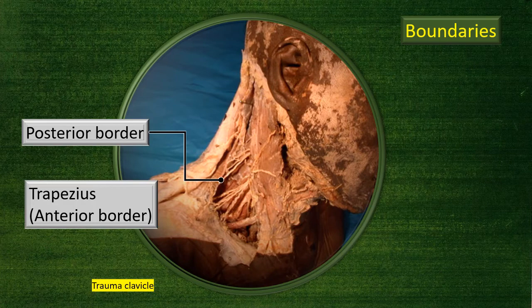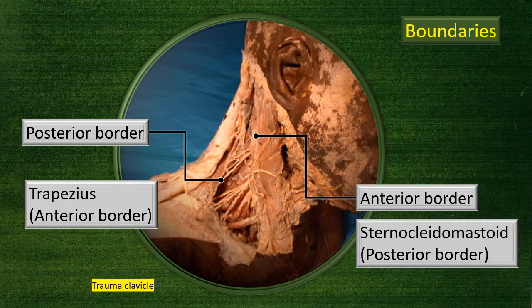The boundaries: the anterior border of the trapezius muscle forms the posterior boundary of the triangle, and the posterior border of the sternocleidomastoid muscle forms the anterior boundary. The middle third of the clavicle at the base is also important clinically.